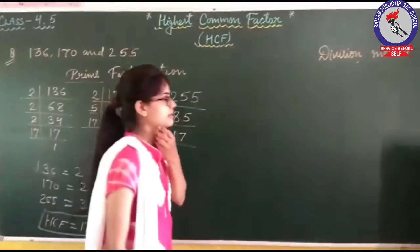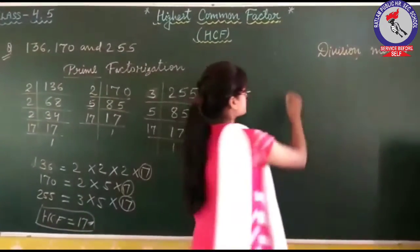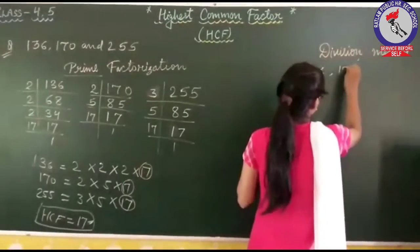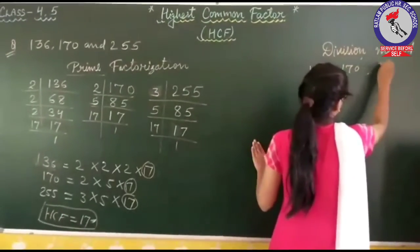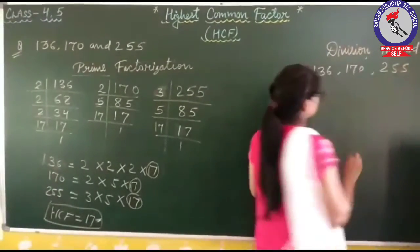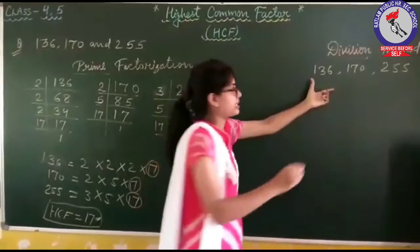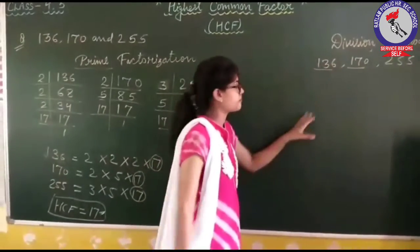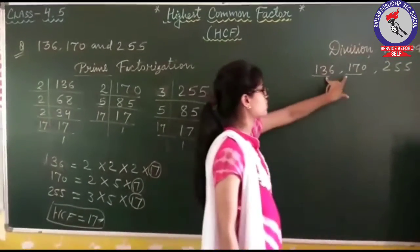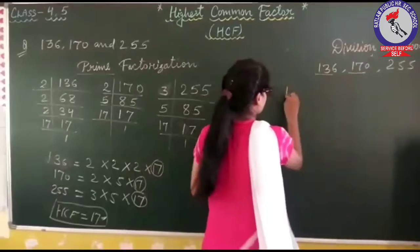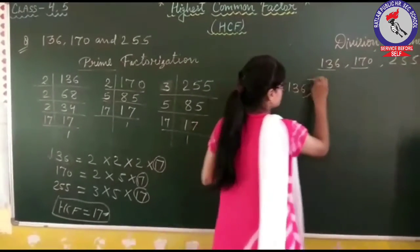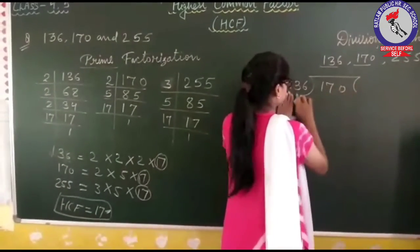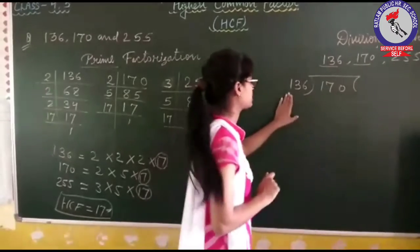Now the second method is the division method. In this method, we take the numbers 136, 170, and 255. We divide the larger number by the smaller number, taking only two numbers at a time. So first we divide 170 by 136.